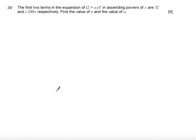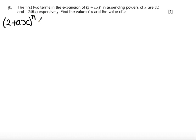In part b, we're told the first two terms in the expansion of (2 + ax) to the power of n in ascending powers of x are 32 and -240 respectively. Find the value of n and the value of a. To use the (1 + x)^n form, I need to rewrite (2 + ax)^n as 2^n times (1 + (a/2)x) to the power of n.